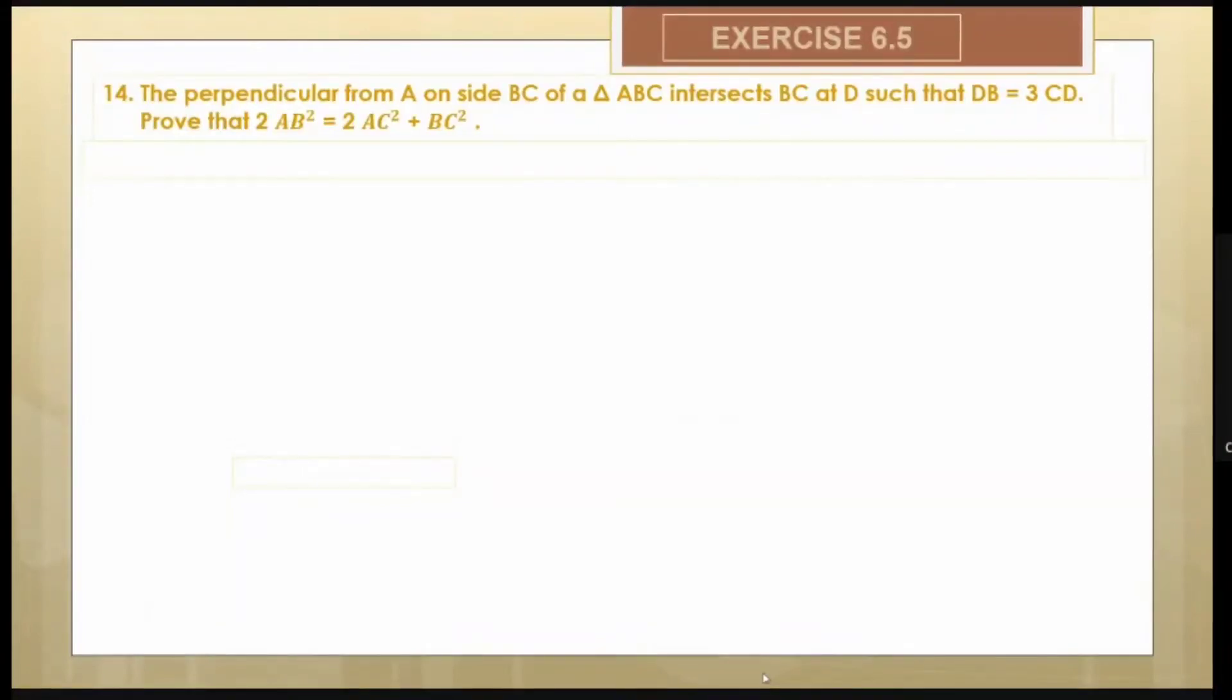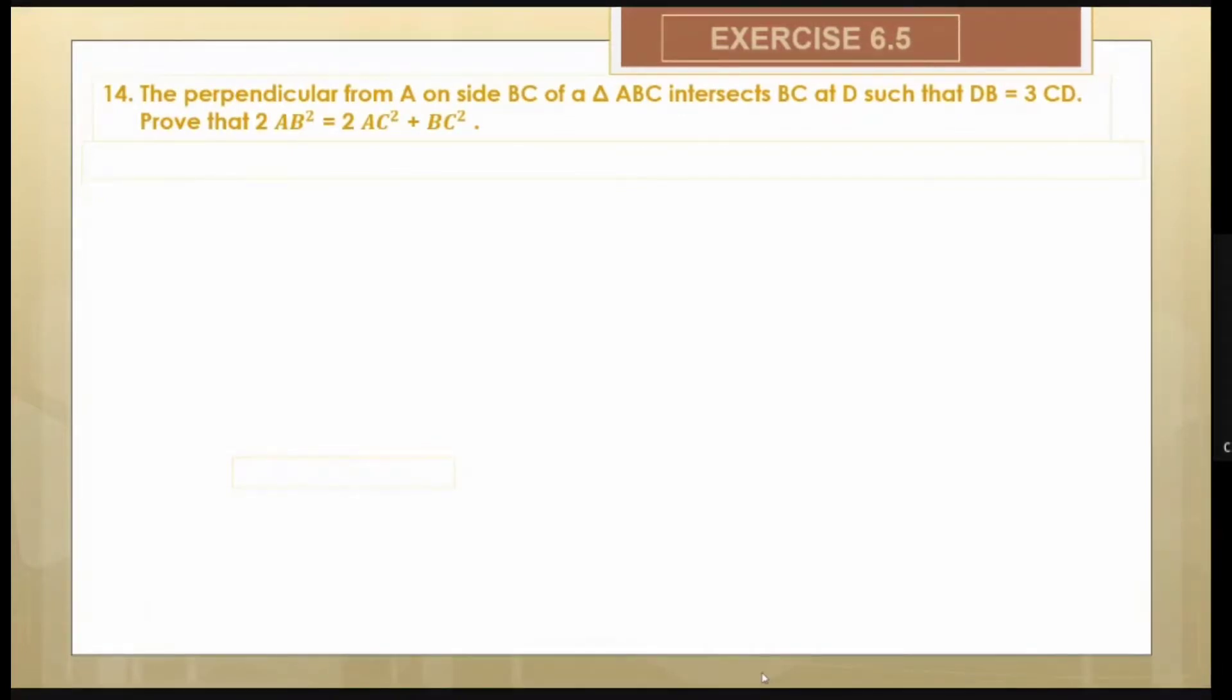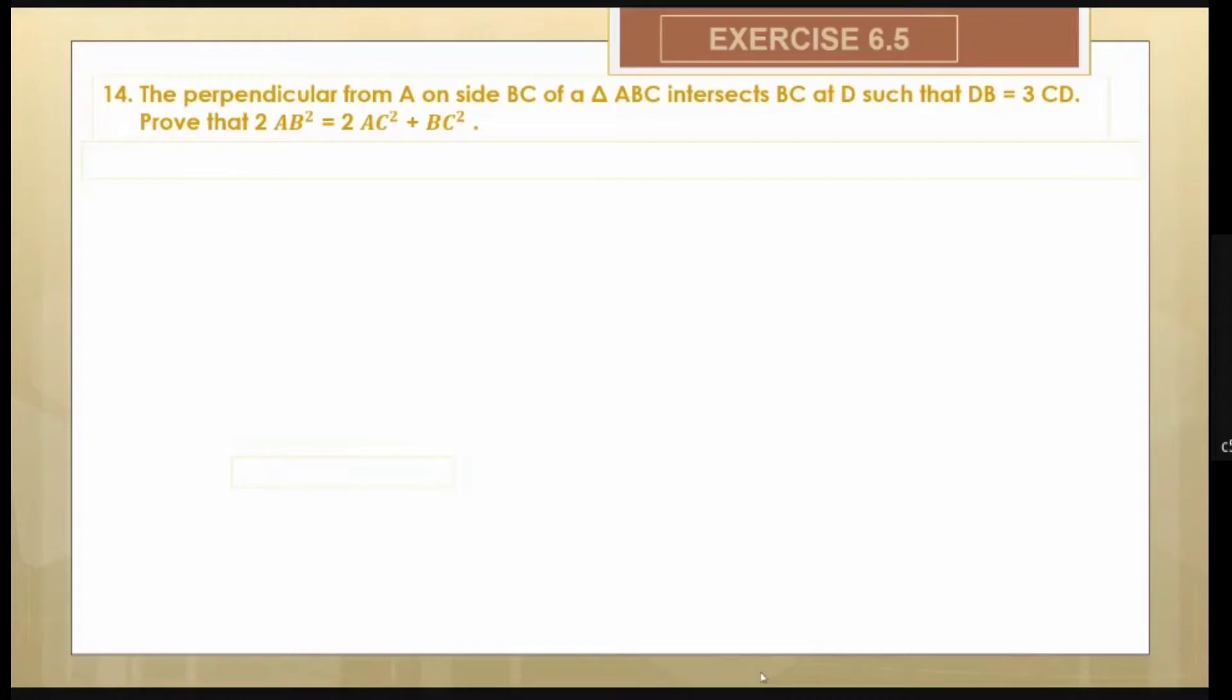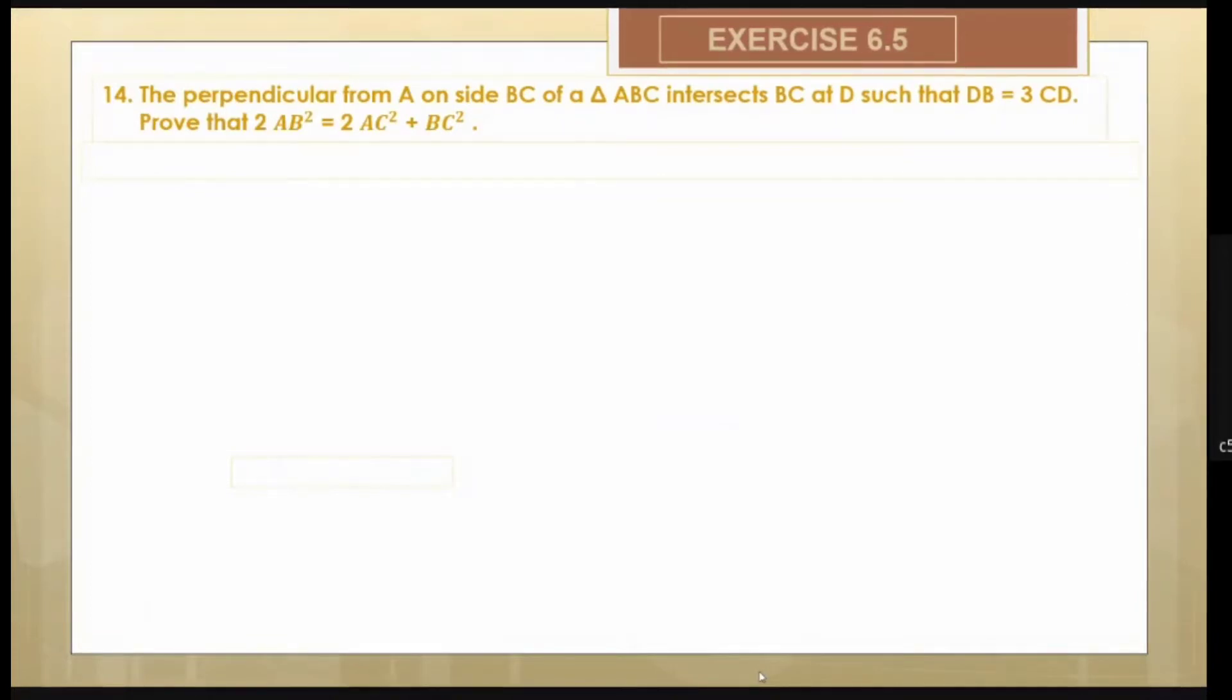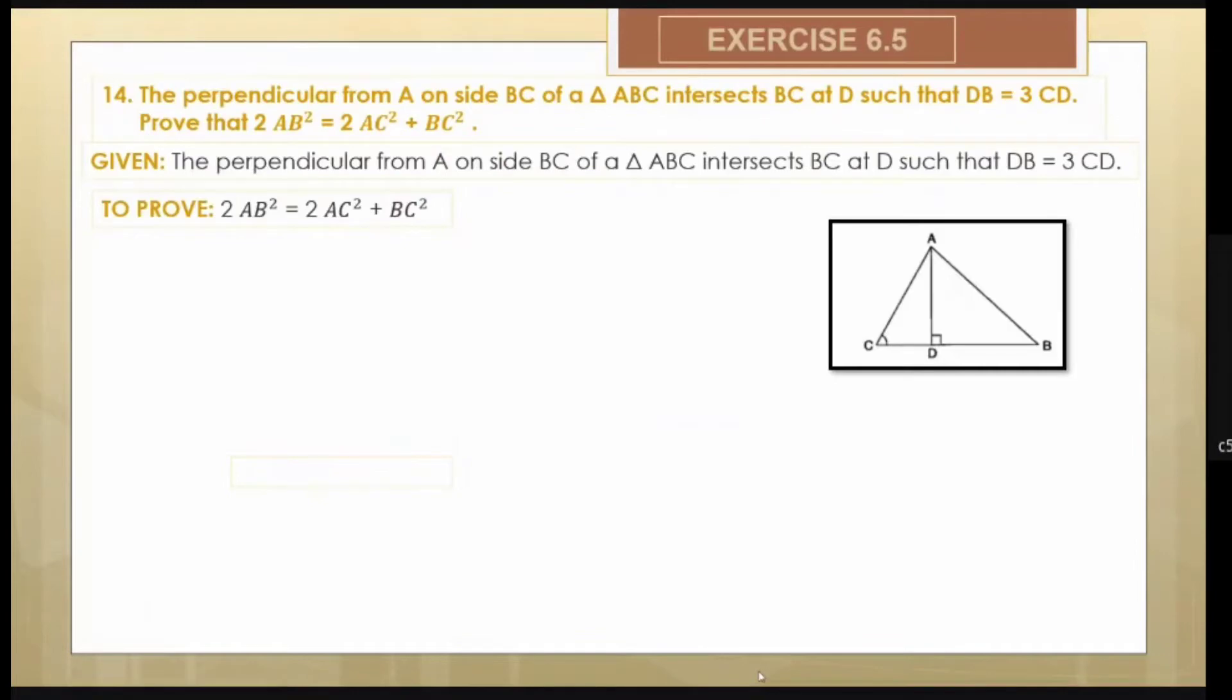We are doing the 14th question of Exercise 6.5. It states that the perpendicular from A on the side BC of triangle ABC intersects BC at D such that DB is equal to 3 times CD. Prove that 2AB² = 2AC² + BC².